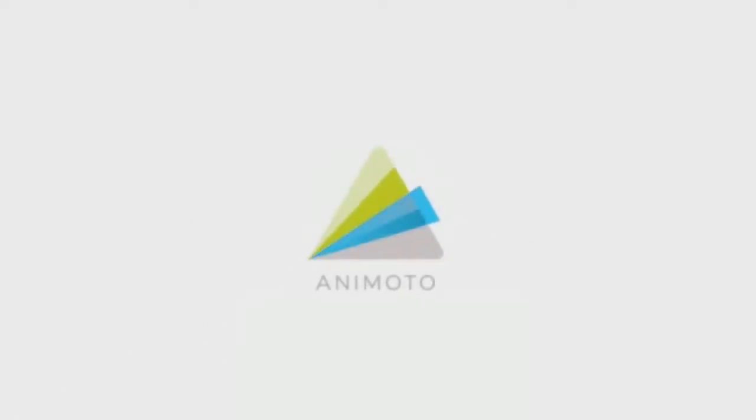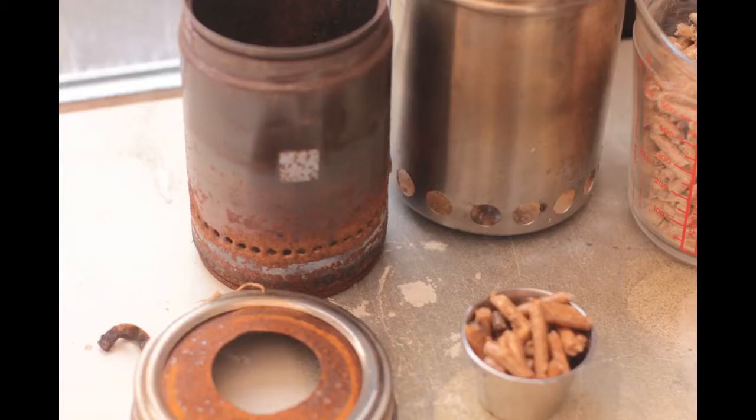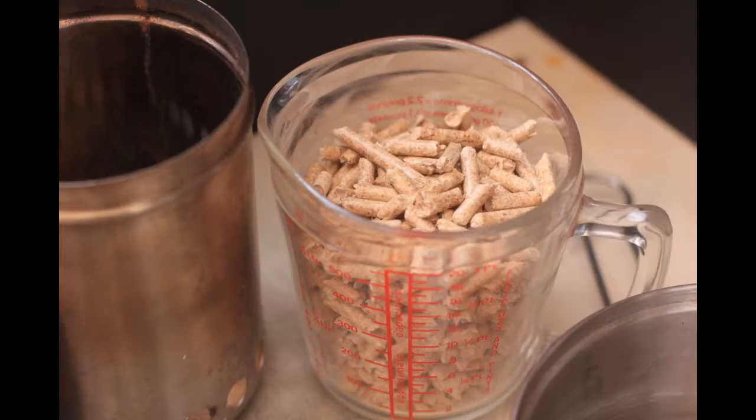I wanted to do a little video on the Everything Nice camp stove, wood gas camp stove, and this one's made out of an Illy coffee can. We've got a Tesco stainless steel tea canister there. I'm going to fill it up with cat litter, wood pellet cat litter.